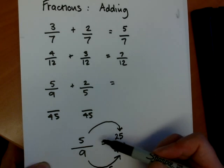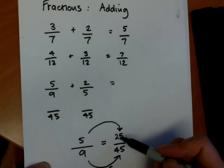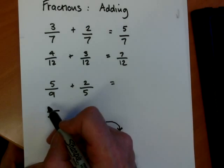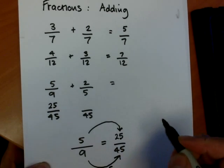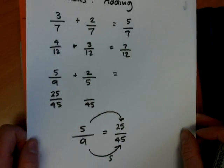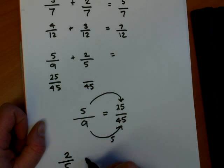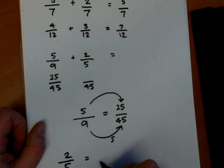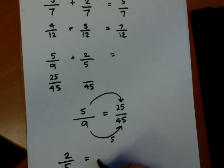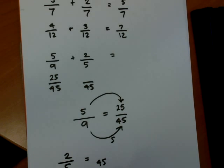So 9 times 5 is 45 and 5 times 5 is 25. So I write my 25 there. Now to change the 2 fifths again I'll show you how I do that. So I'm going to change 2 fifths. I want it to be in 45ths so I know that I've times my 5 by 9 to get 45.